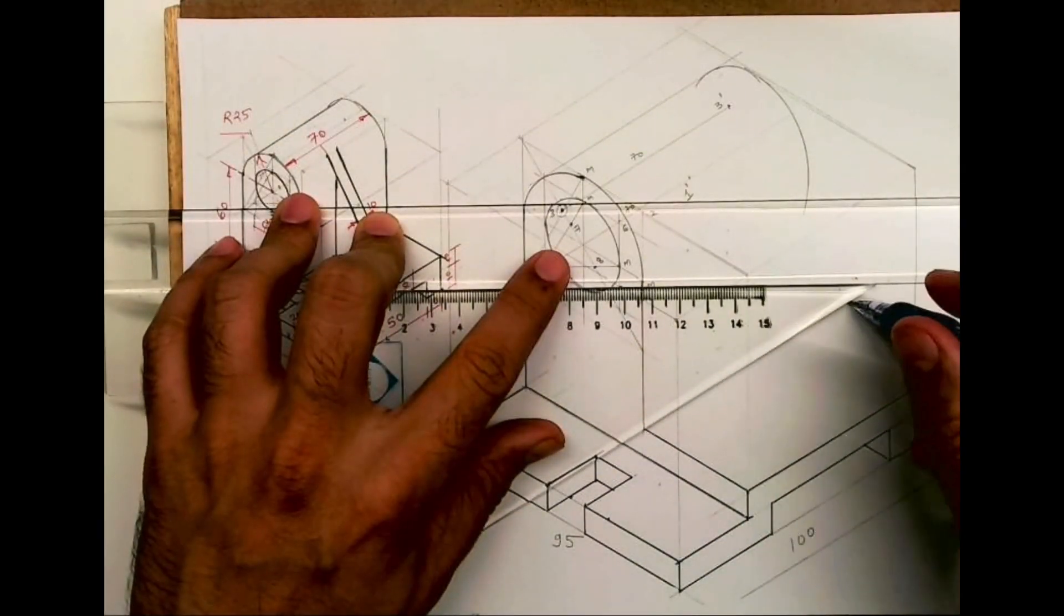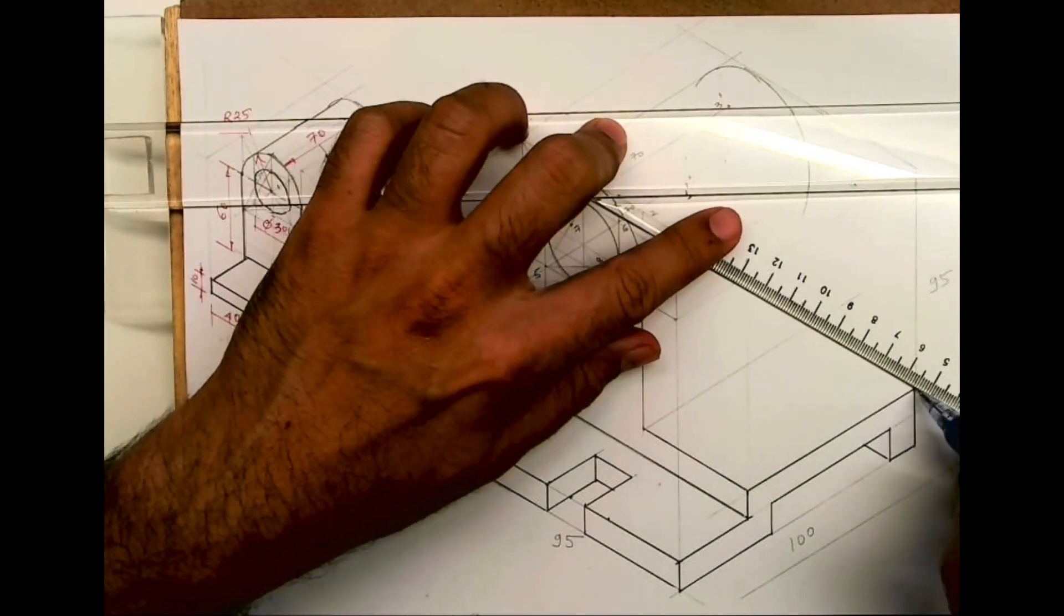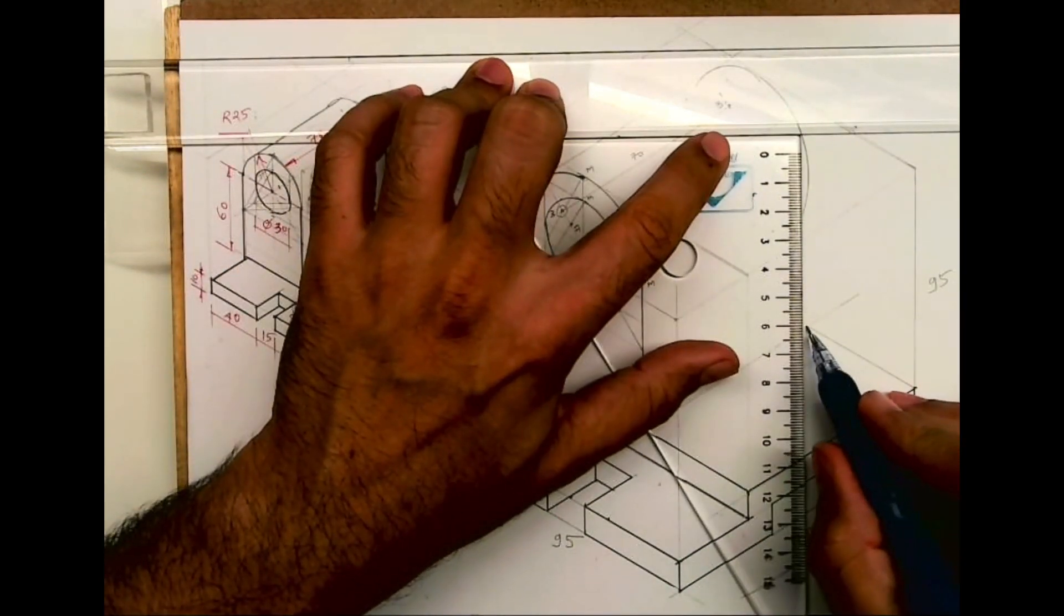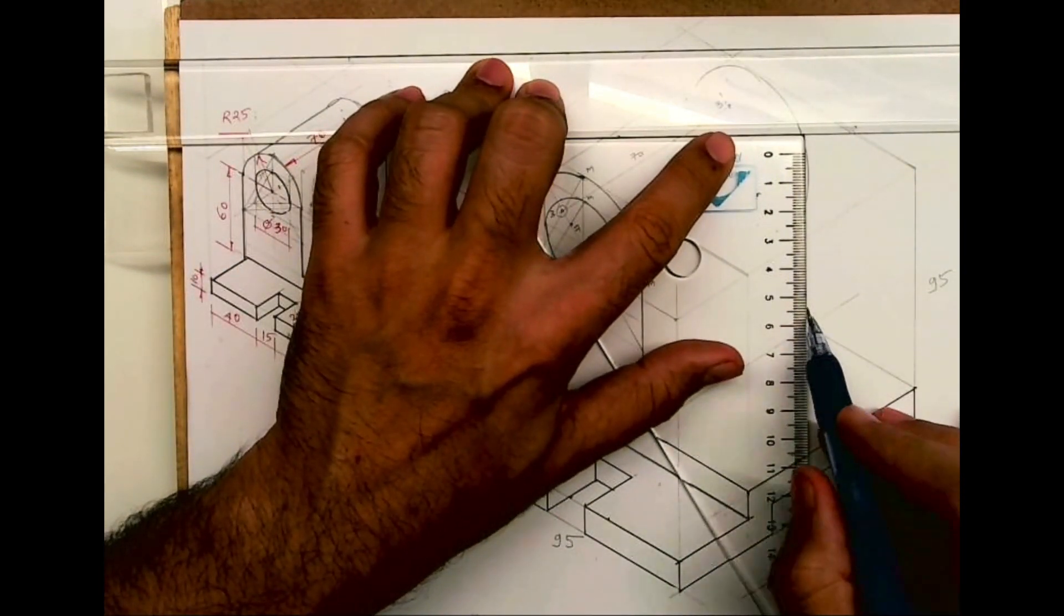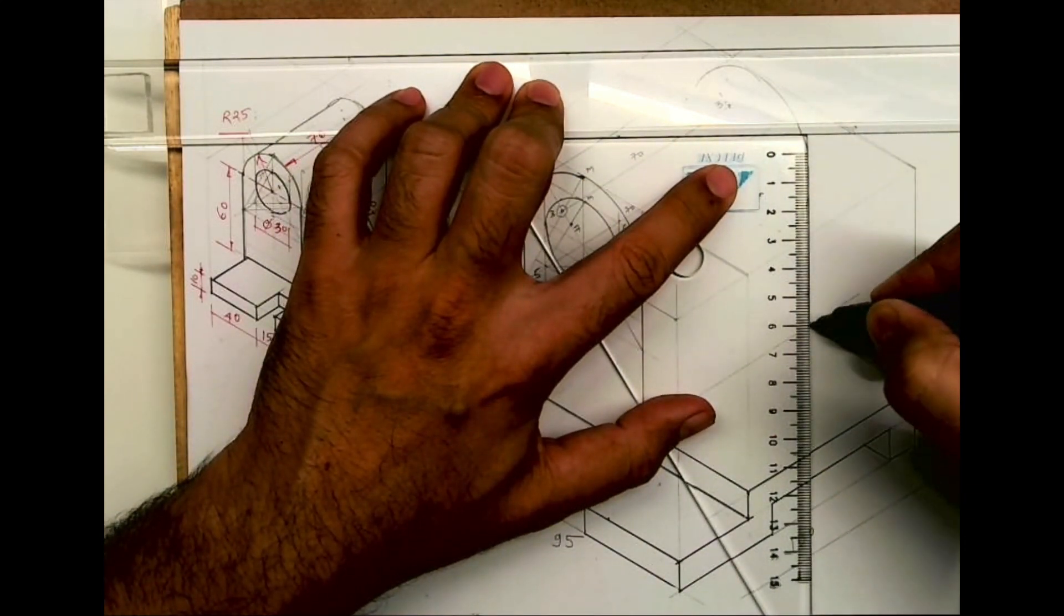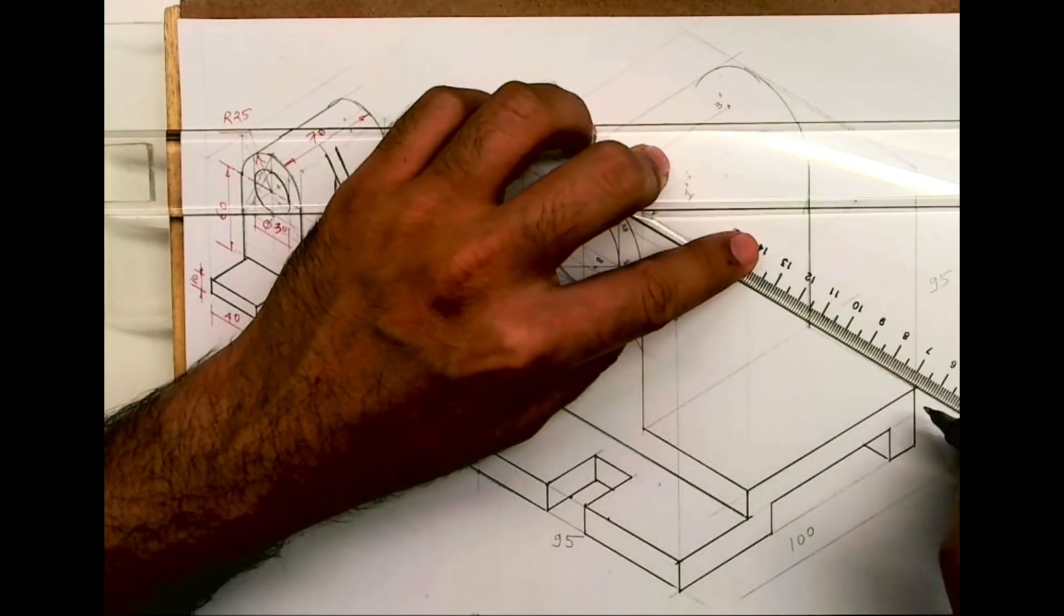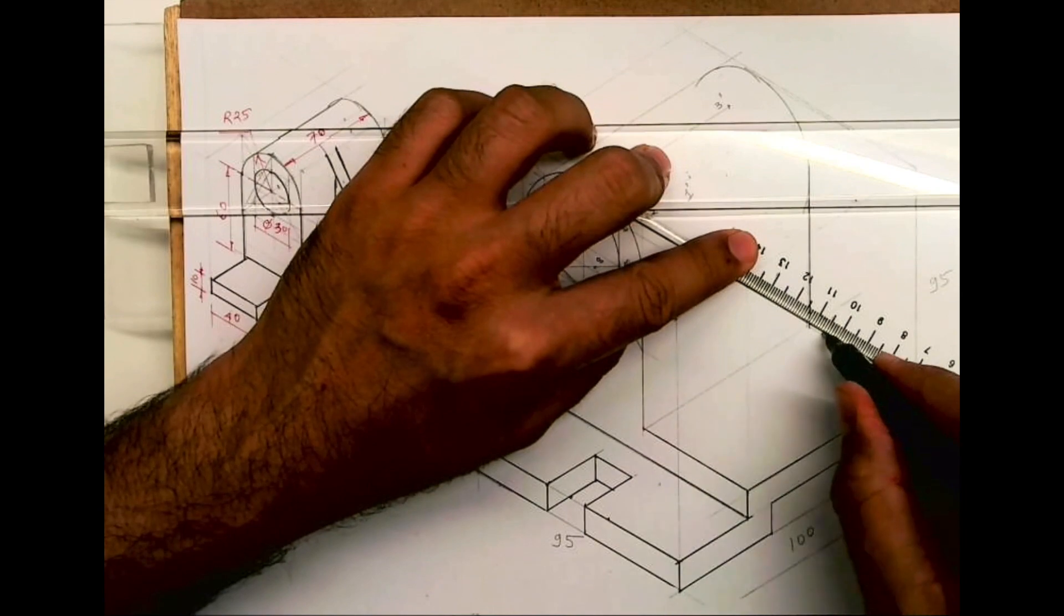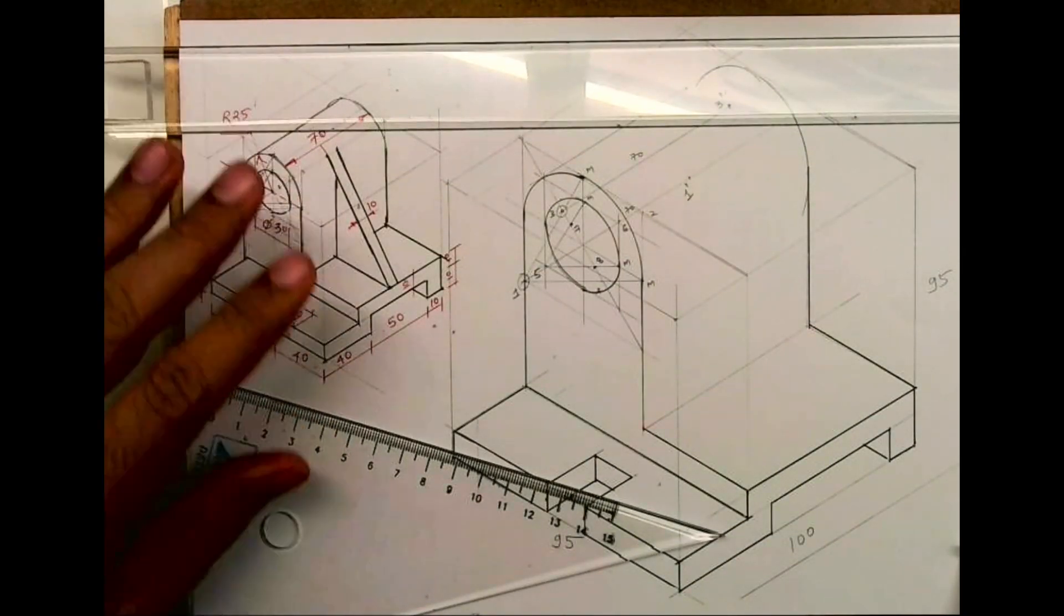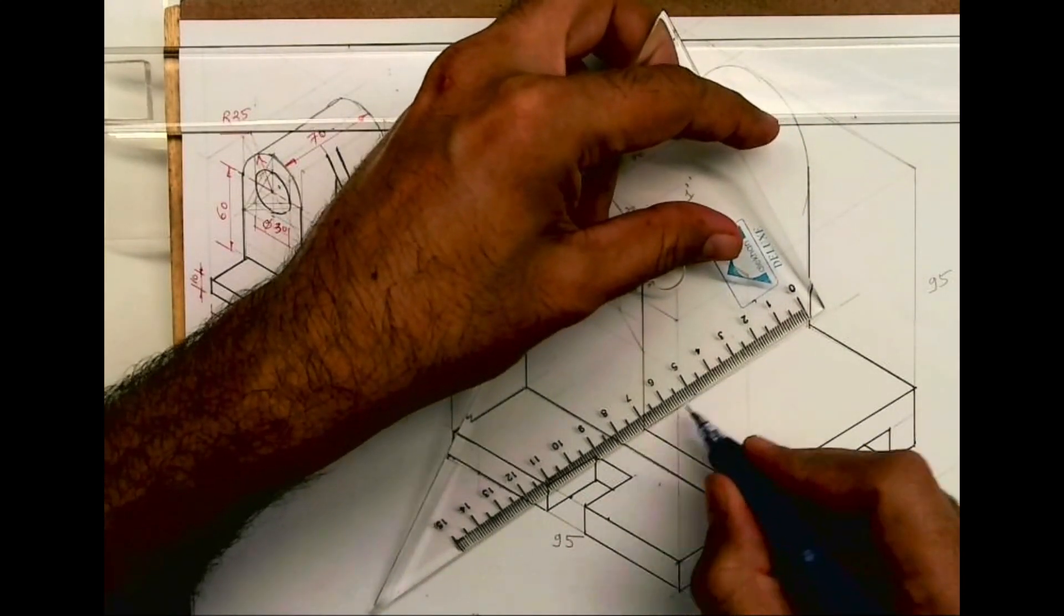Now this point I'll go behind by 70. So we'll get this part, behind portion. Now see how much is this? 70.